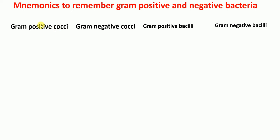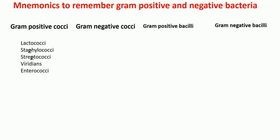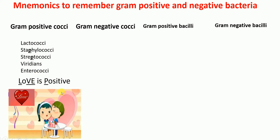Let's first start with gram-positive cocci. For gram-positive cocci we have bacteria such as Lactococci, Staphylococci, Streptococci, Viridans, and Enterococci. The mnemonic for this is 'Love is Positive.'